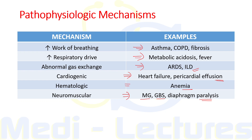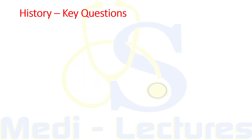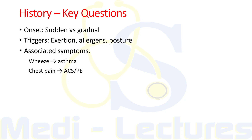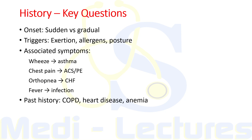Now let's move on to the approach to the patient, starting with history taking. If you are asking the right questions, 80% of your diagnosis is already made. We have to ask about onset — whether sudden or gradual — classifying it as acute, subacute, or chronic. We ask about triggers like exertion, allergens, or posture. Associated symptoms include wheeze in asthma, chest pain suggesting ACS or pulmonary embolism, orthopnea in CHF, and fever indicating infection. We also consider past history of COPD, heart disease, or anemia.